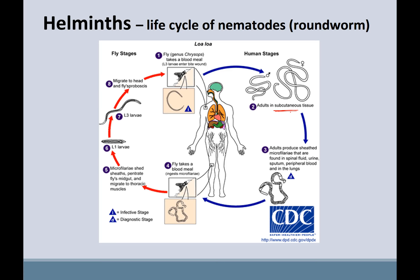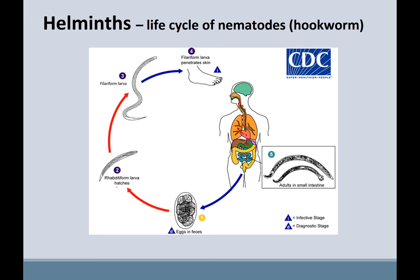Nematodes, or roundworms — you can see this is a subcutaneous infection, right under the skin. The adults are producing microfilariae, which are egg sacs. In this case, a nematode is transmitted by a biting fly, and the growth and reproduction actually happens in the fly. This hookworm is one of the types that can enter right through your skin.